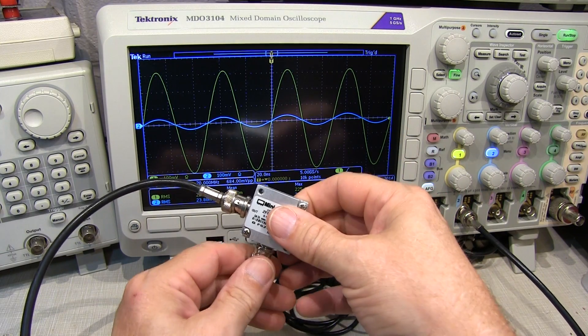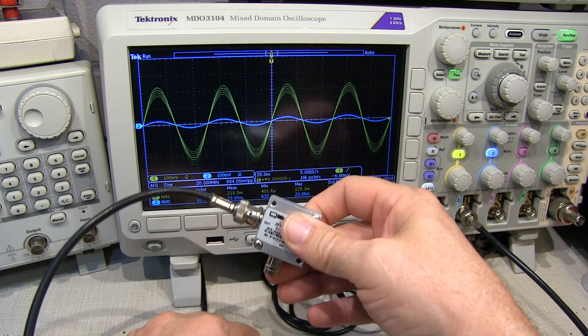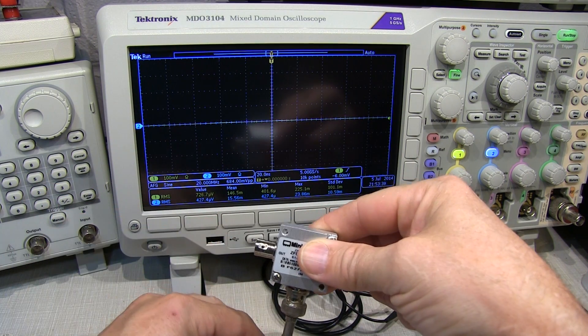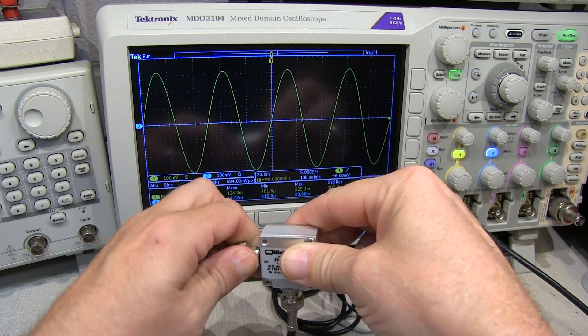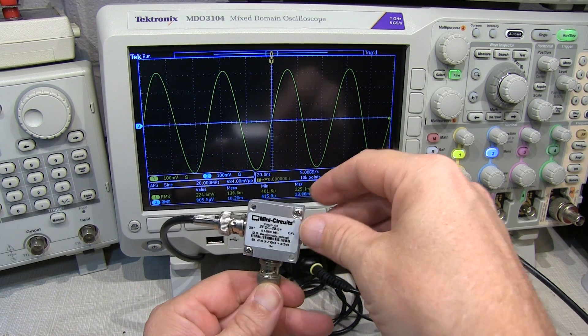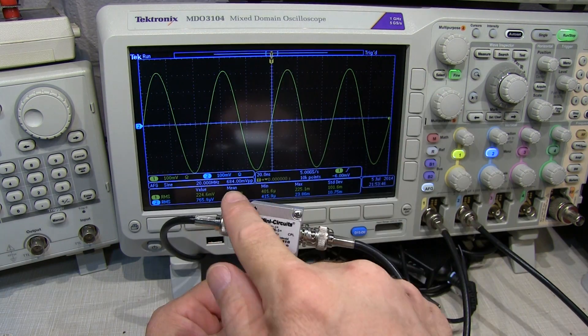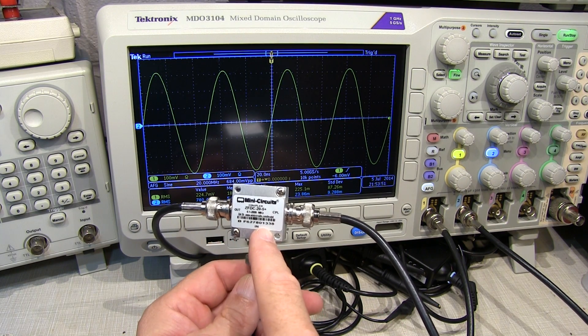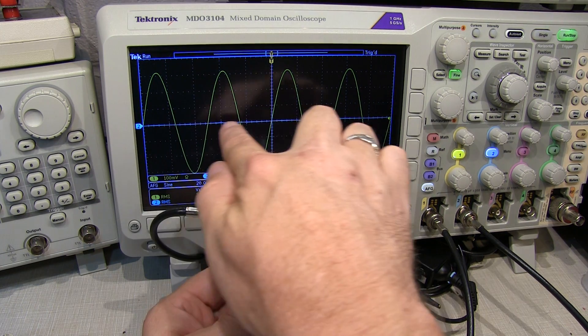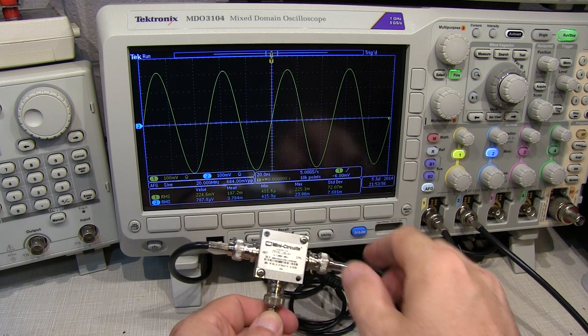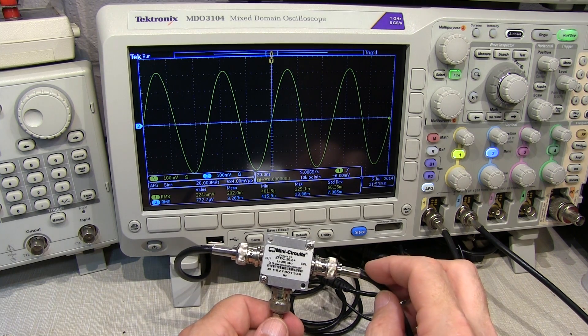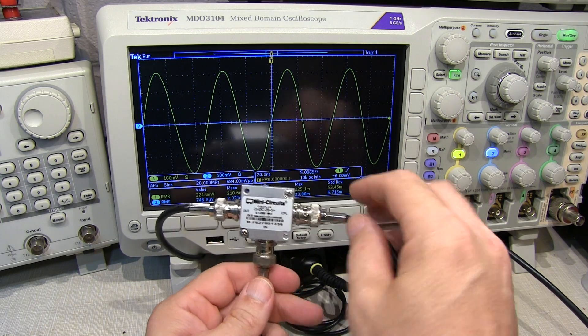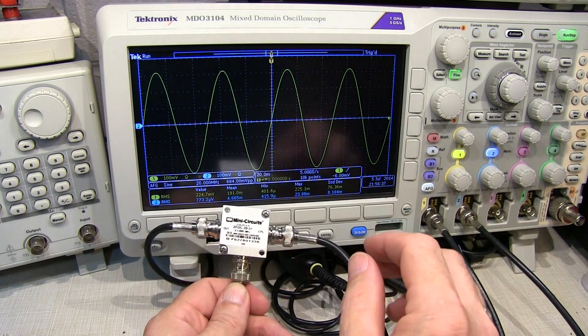So what I'll do is I'll just reverse the input and output. So I'll take my signal generator off here, take the output, the signal going to channel one of the scope and go to the input and go to the output here. So now if we take a look, I'm still getting my full signal through the mainline path. The mainline loss is basically the same in either direction, but now that coupled port is barely visible and it's only reading in the hundreds of microvolts now, probably just looking more at noise. But it's going to be 55 dB down or more in that reverse direction.